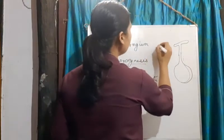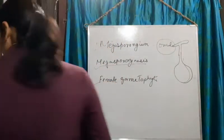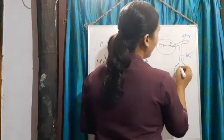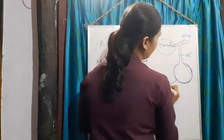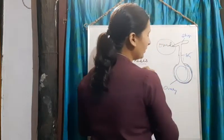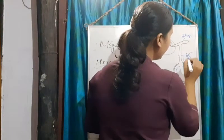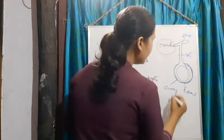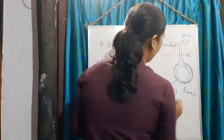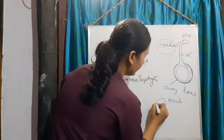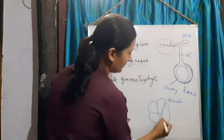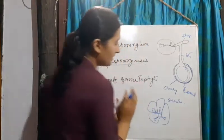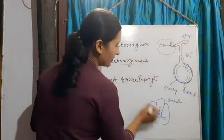The megasporangium is nothing but the ovule. If you remember the structure: this was the stigma, this is the style, and the bulky oval-shaped one is your ovary. Inside the ovary there is a locule, which is a chamber, and inside the locule the ovule is produced. So today we are going to learn the structure of the ovule.